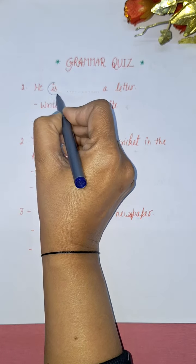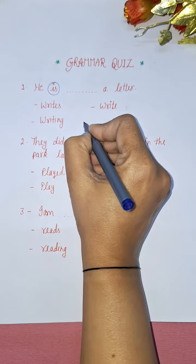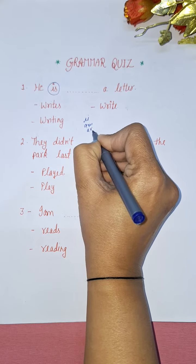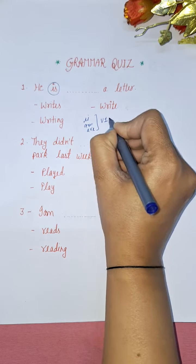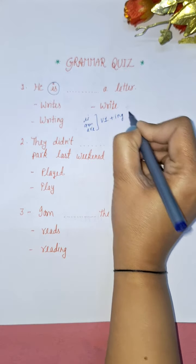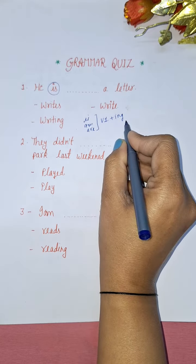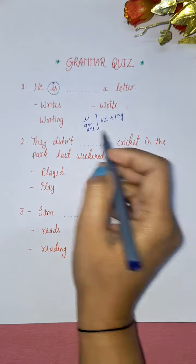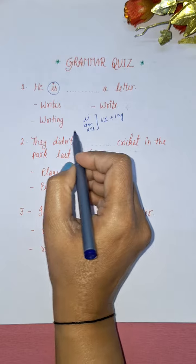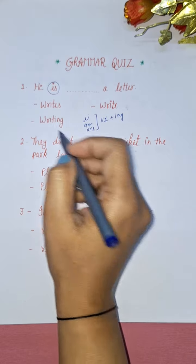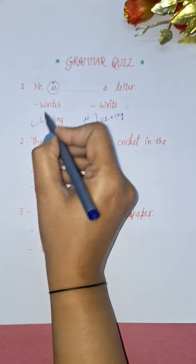With is, am, are - with all three we always use V1 form plus ing form. V1 plus ing form of the word we always use with is, am, are, because it is present continuous tense here. So we will write - the right option will be writing. He is writing a letter.